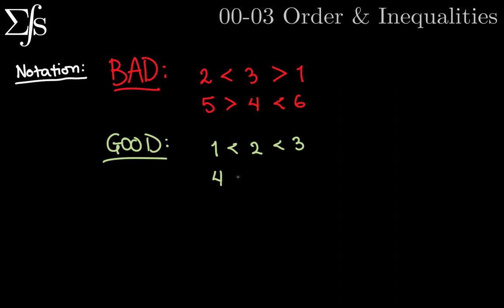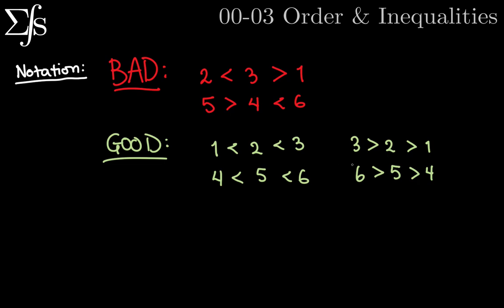Here we have four is less than five is less than six. Or you could do it the other way: three is greater than two is greater than one, or six is greater than five is greater than four. Any one of those four is acceptable. However, the mixed-direction versions are not good.